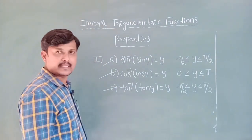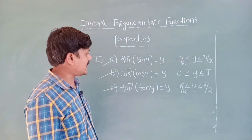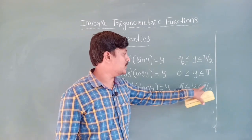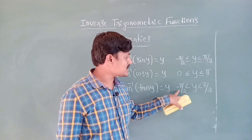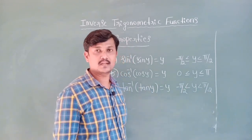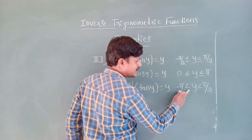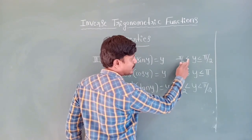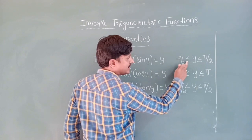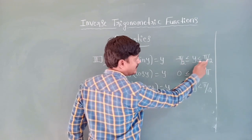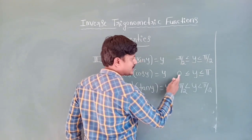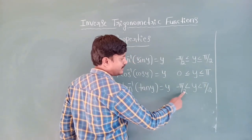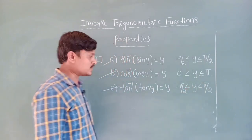Consider tan⁻¹(tan y) = y, only when y lies between minus pi by two to pi by two — open interval, so minus pi by two and pi by two are not included. For sin inverse and cos inverse, the endpoints are included. For tan inverse, there is no equal sign, so the endpoints are not included.